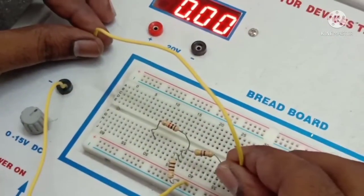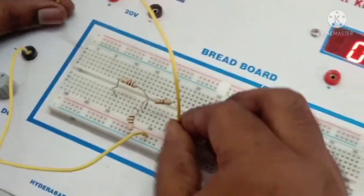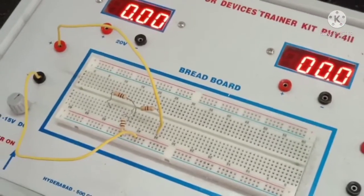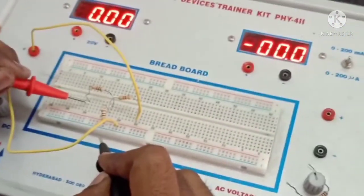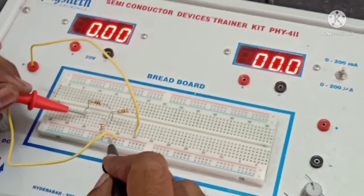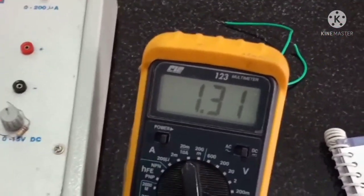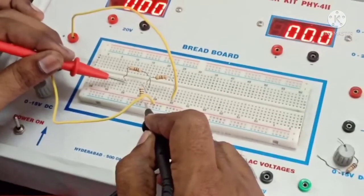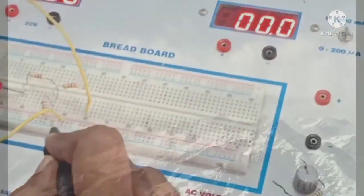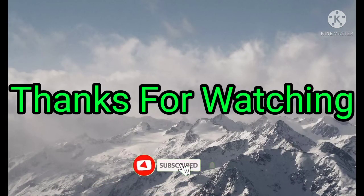In the second step, I need to interchange the positions of excitation and response. So the voltage source is connected in series to the 470. And the current is measured through 1 kilo ohm resistance. If you observe in the second step, we got the same value of current. So we can see that the reciprocity theorem is verified.